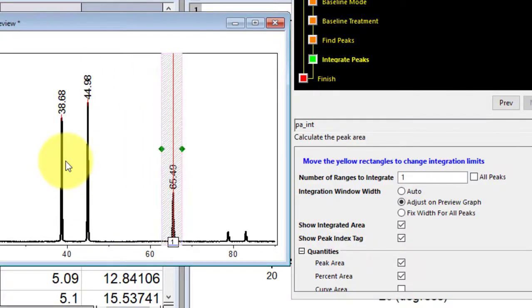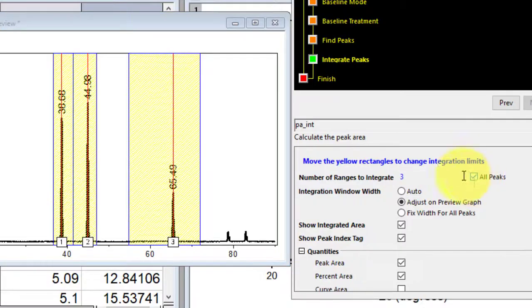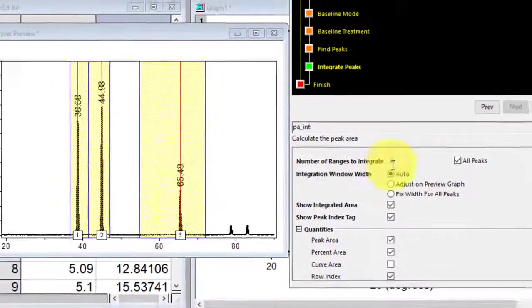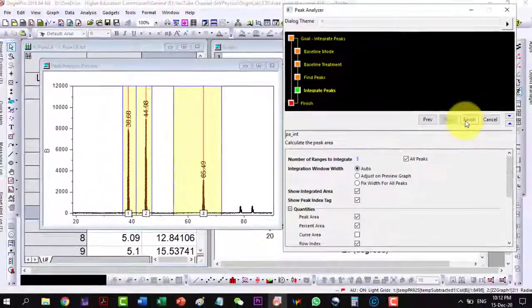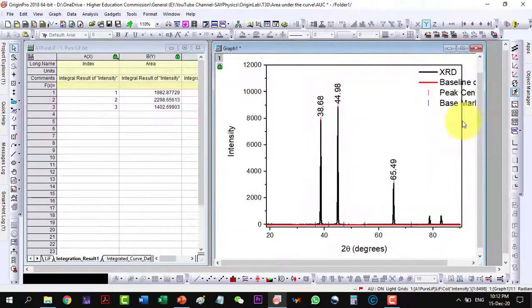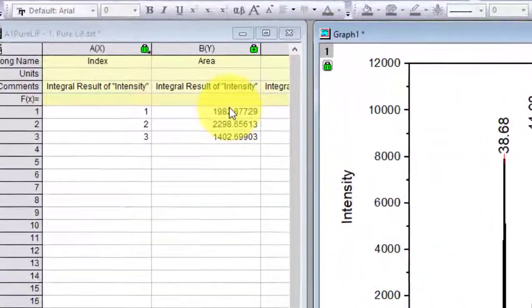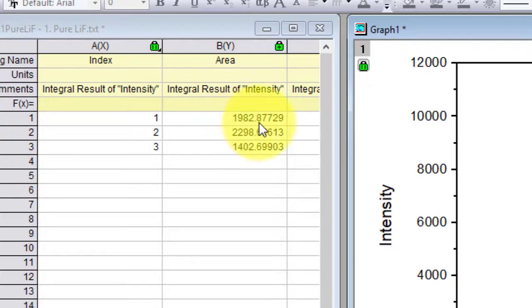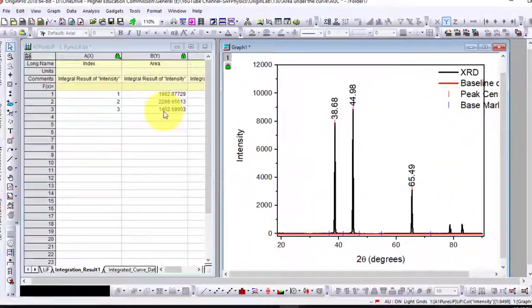So it can be done manually as well, but it is always better to find out the area under all peaks, so that less effort is done and we will have more information. All three peaks are selected, and I will click Finish. And here the area is: Peak one is having this much area, peak two having this much area, and peak three is with this much area.